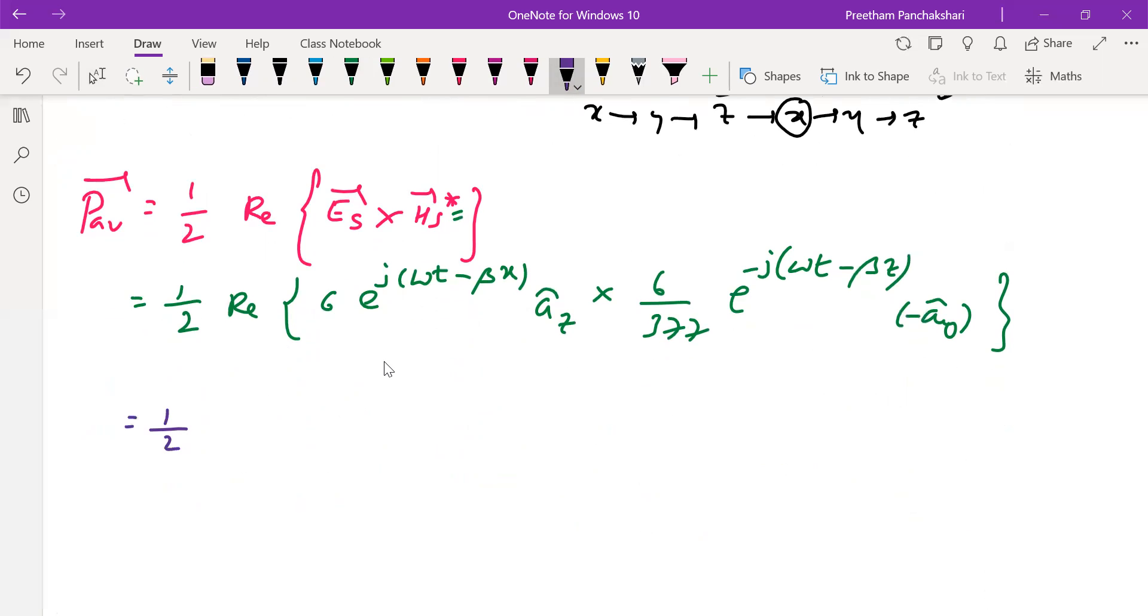Finally, half. 6 is real, take out. 6/377 is also real, take out. And this exponential term after multiplication, they get cancelled out. Next, â_z cross minus â_y is x. So this is going to be ½ into 36/377 â_x. It is going to be 0.0477 â_x.